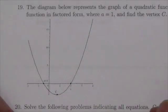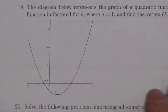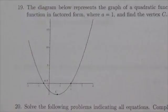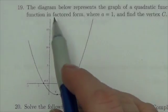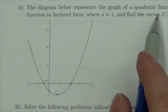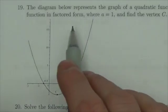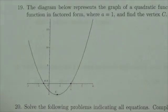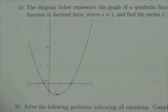Hi everybody. We're working through the quadratic functions and equations review. We're on question 19 here. It says the diagram below represents the graph of a quadratic function. Determine the equation of the function in factored form, where a equals 1, and then find the vertex.